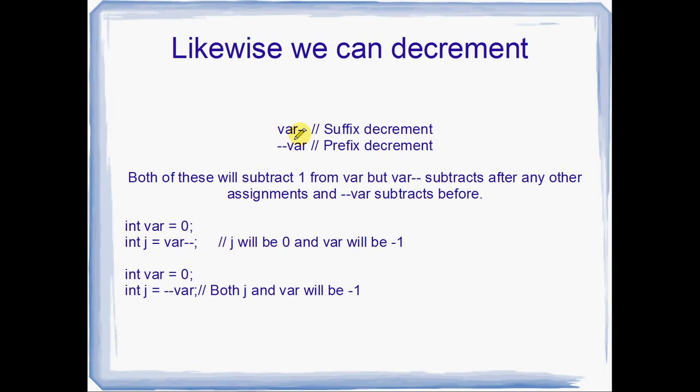Okay, more examples here. This time we're talking about decrementing. So decrementing is just subtracting one from a variable, either an integer or a float, it doesn't matter. But we've also got var-- and --var. So we've got suffix and prefix decrement as well. And both of these will subtract one, and it's exactly the same as before. The suffix decrement happens after the other operators. So right here, j is going to get the value of var when var is still zero.